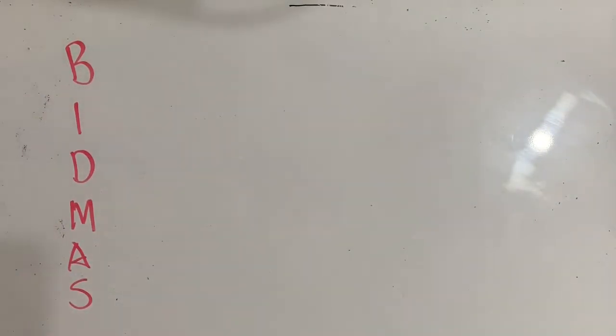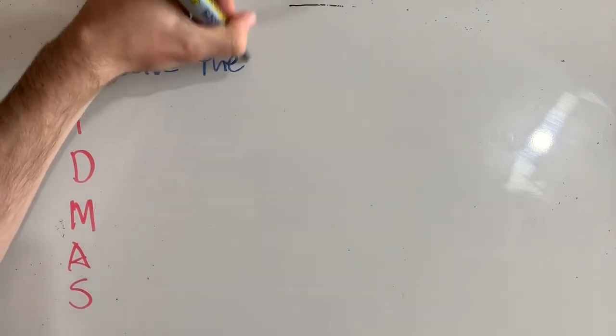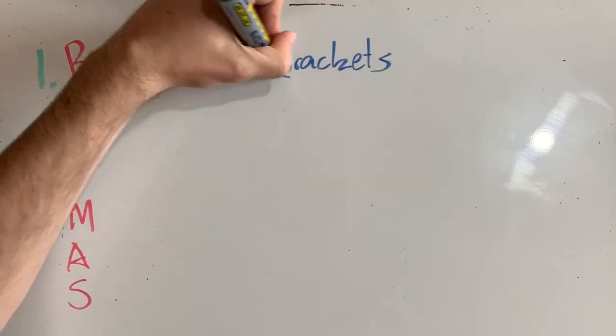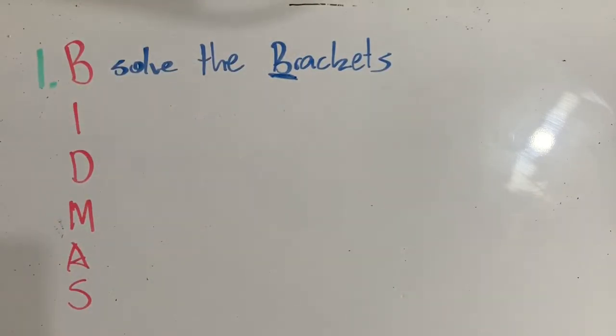BIDMAS. Each of these stands for something. But really, we can break this down in four steps as well. And I'm hoping not to confuse you today. So the first one is step one. We think about our B. And we can think of this. Our first step is to solve the brackets. So B is for brackets. P might be for parentheses.